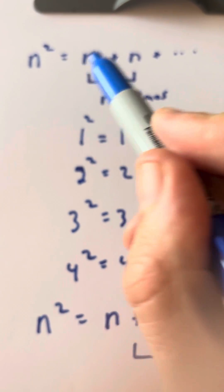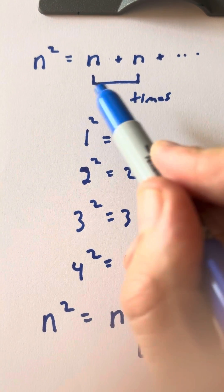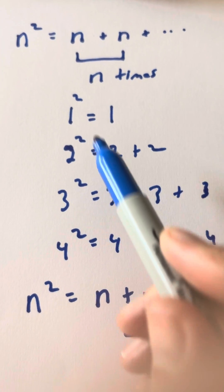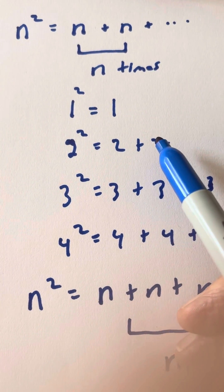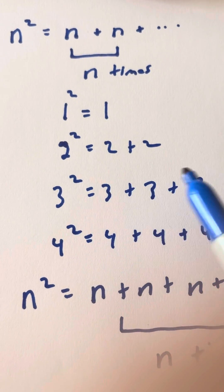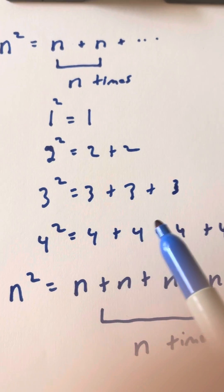We have n squared equals n plus n plus n plus n times. So why does that work? Well, just take a look here at the pattern. 1 squared is equal to 1. 2 squared is 2 plus 2, which is 4. 3 squared is 3 plus 3 plus 3. 4 squared is 4 plus 4 plus 4 plus 4.